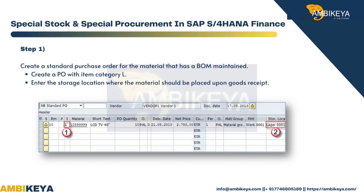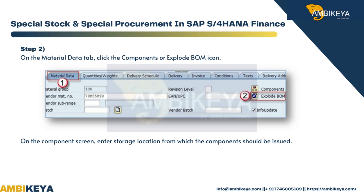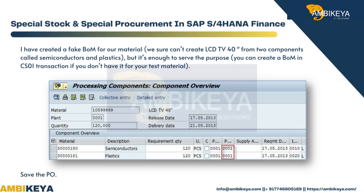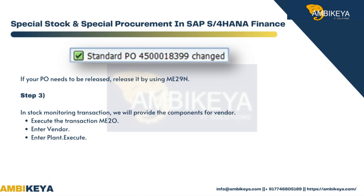Step 1: Create a standard purchase order for the material that has a BOM maintained. Create a PO with item category L, enter the storage location where the material should be placed upon goods receipt. Step 2: On the material data tab, click the Components or Explode BOM icon. On the component screen, enter the storage location from which the components should be issued. You can create a BOM in the CS01 transaction. Save the PO; if your PO needs to be released, release it using ME29N.